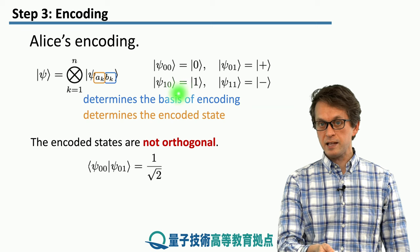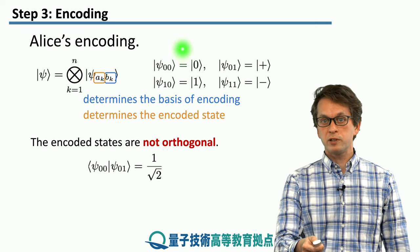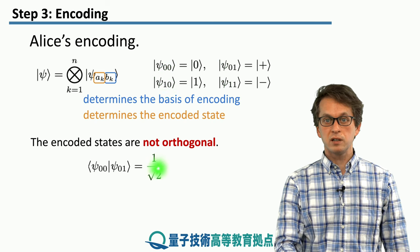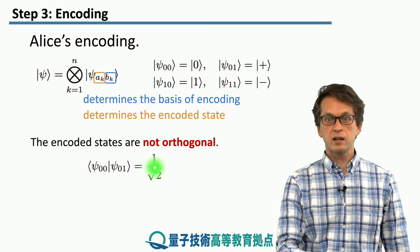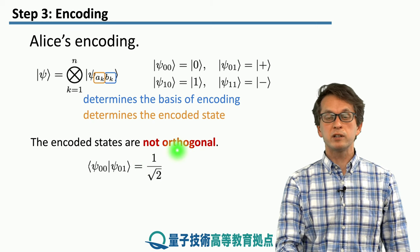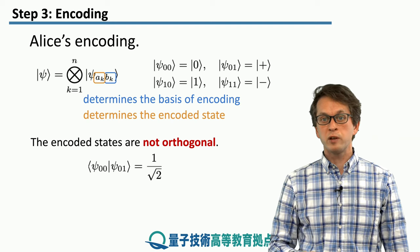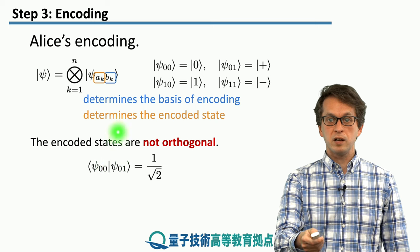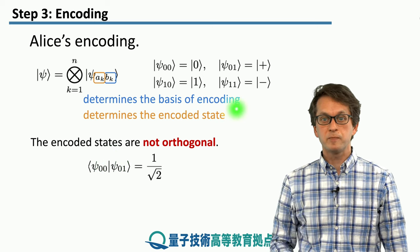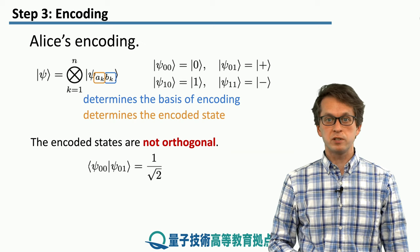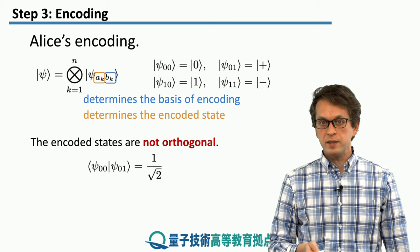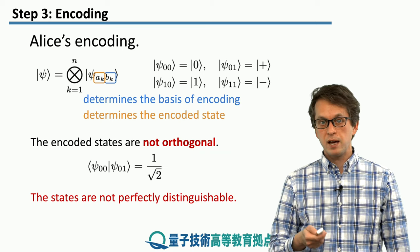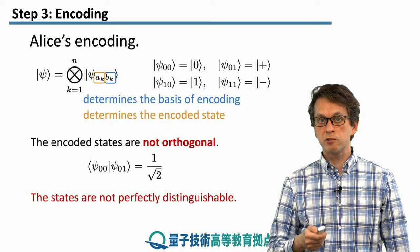Notice that these states are not orthogonal. For example, if we take the inner product between psi(0,0) and psi(0,1), we see that they are not orthogonal — their inner product is non-zero. In this particular case, it's 1 over square root of 2. Similarly, taking psi(1,0) and psi(1,1), we again get a non-zero inner product. When the inner product is non-zero, the two states are not perfectly distinguishable, and this is a crucial ingredient in this protocol.